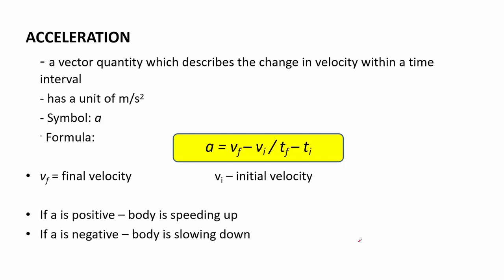Let us look at another physical quantity called acceleration. Acceleration is a vector quantity that describes the change in velocity over change in time. Its unit is described as meter per second squared. Symbol of letter a and a formula of v final minus v initial over t final minus t initial.